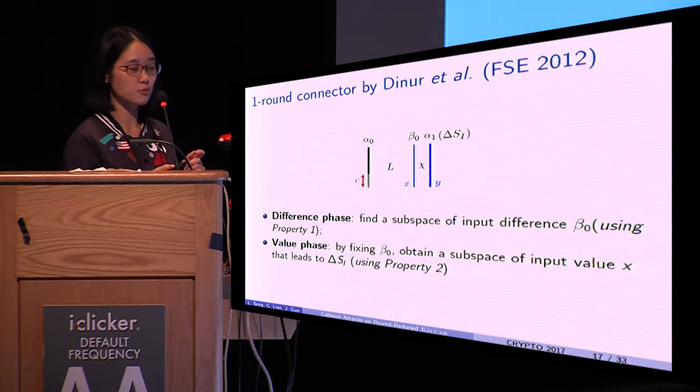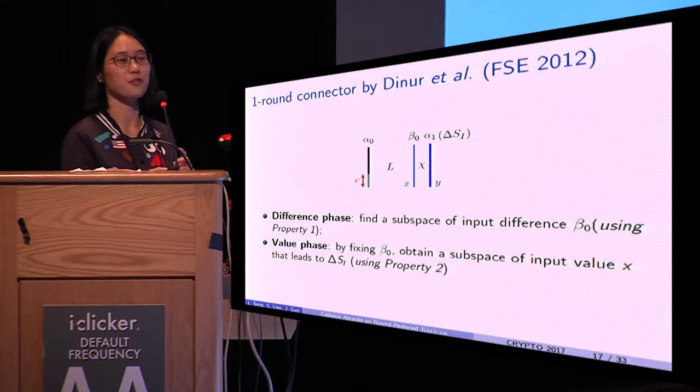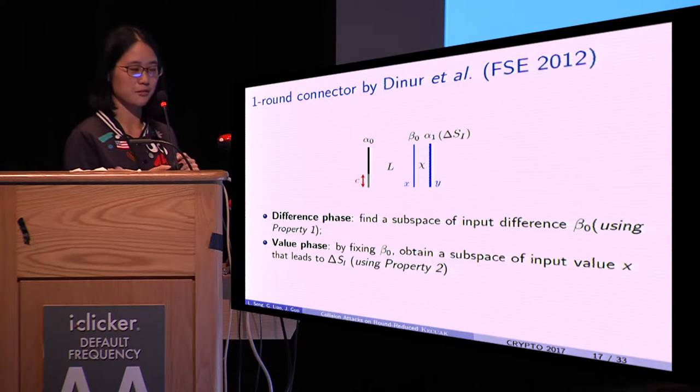Based on these two properties, the one-round connector proceeds in two phases. Suppose the input difference and output difference of chi are β_i and α_i.